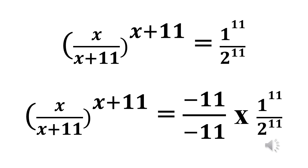We multiply with that so that we can simplify it further, making both the left and right sides of the equation have the same form of exponent. So now we have x over (x plus 11), all raised to power (x plus 11), equals minus 11 over minus 11 times 1 raised to power 11 divided by 2 raised to power 11.